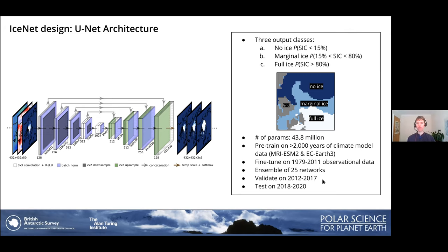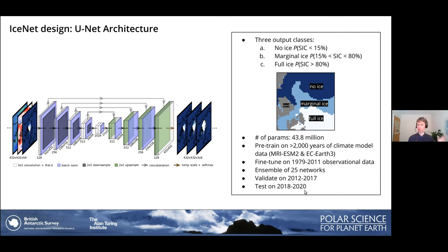IceNet is actually an ensemble of 25 individual networks initialized with different random seeds, leading to different learned input-output mappings — a known technique to significantly improve performance. We leave six years (2012–2017) as our validation set for halting training and Bayesian hyperparameter search. The test set covers 2018–2020, not used until the model was finalized — these three years represent our true ability to generalize to unseen data.